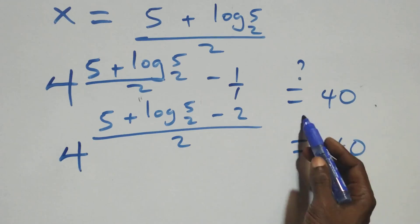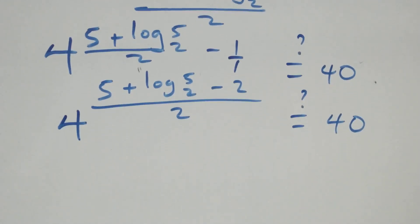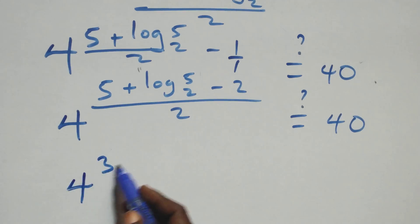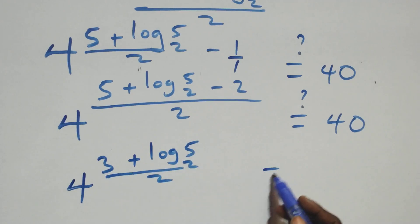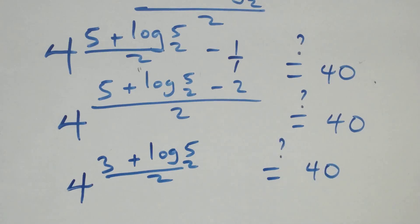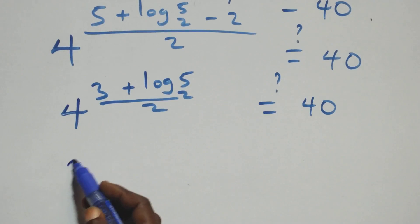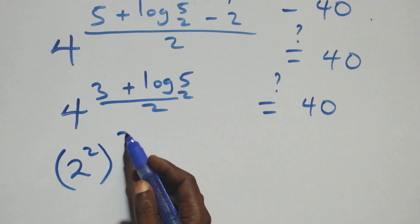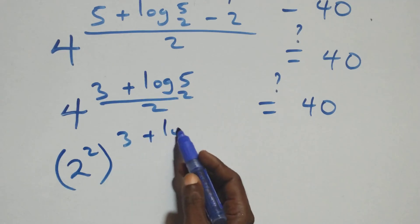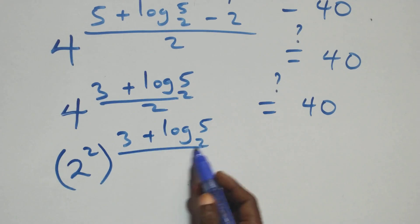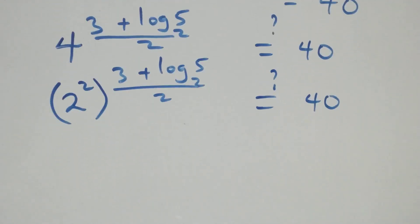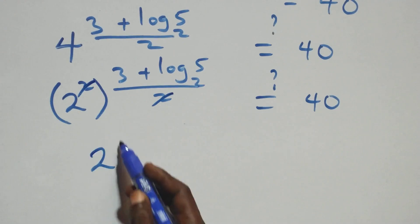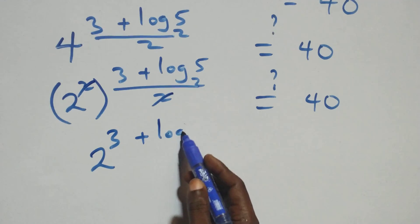We express 4 as 2 squared, raised to power (3 + log₂5) over 2. The 2 in the exponent and the 2 from squaring multiply together, giving 2 raised to power (3 + log₂5). Using the exponent identity a raised to power (1 + n) equals a¹ × aⁿ, we have 2³ times 2 raised to power log₂5.